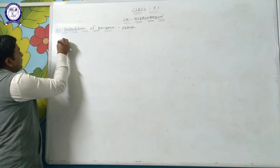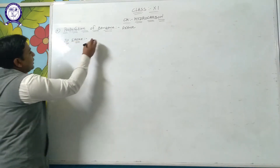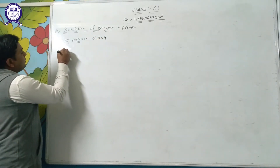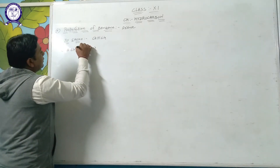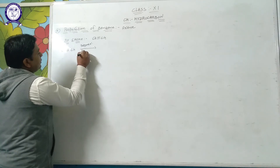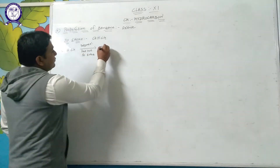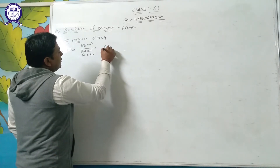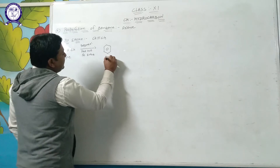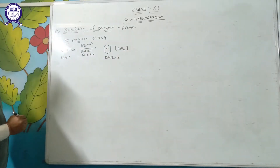First method: from ethyne. Ethyne has the molecular formula CH≡CH. When ethyne undergoes polymerization in the presence of a red-hot iron tube, it gives the formation of benzene, with molecular formula C6H6.